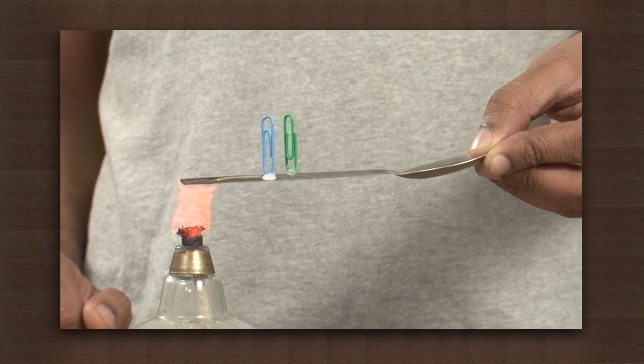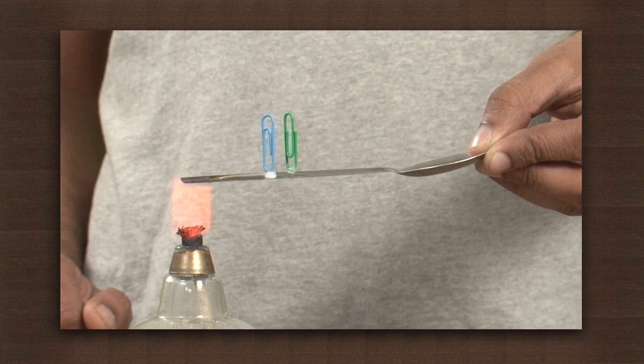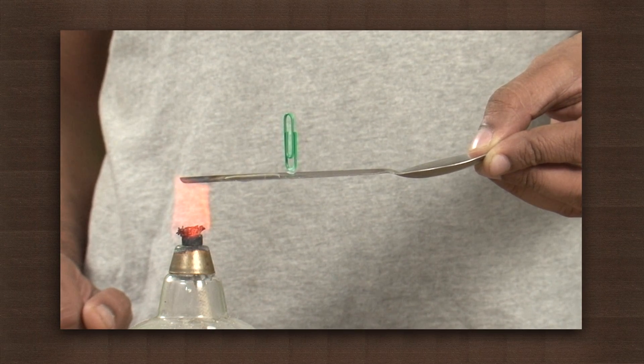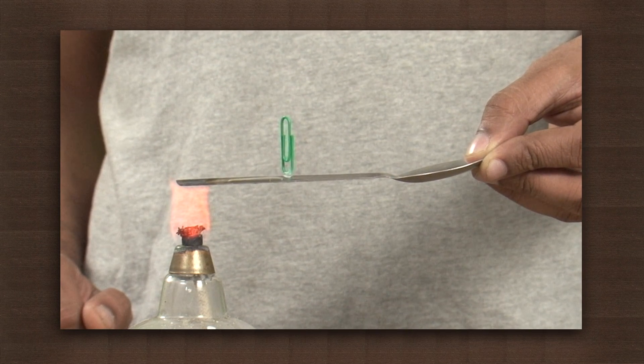The first pin to fall is the one closest to the flame and the last one to fall is the one at the far end of the spoon. This shows that the heat from the flame is travelling along the wire from one end to the other.